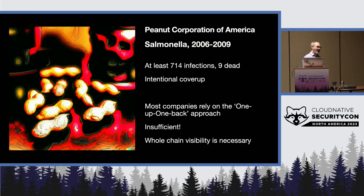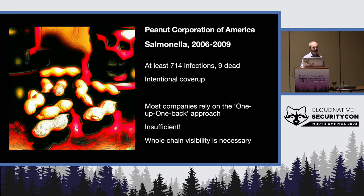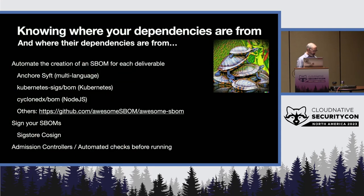Some companies purchased the contaminated peanuts from a third party without knowing the original source was the Peanut Corporation of America. So even after the recall, they continued to sell the products because they didn't have sufficient visibility into the entire supply chain. As software developers we don't have any such excuse — we have the technology to know the individual customers who bought a product and trace it from start to finish. We can take from this that it's not enough to know your direct dependencies; you also have to know what their dependencies are, and so on.